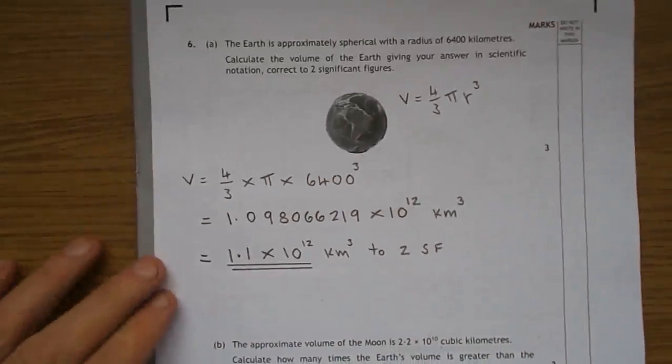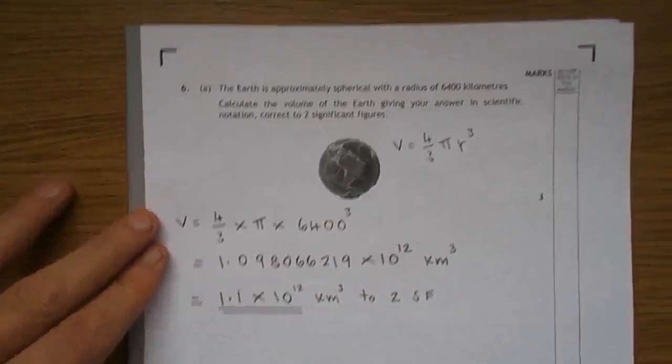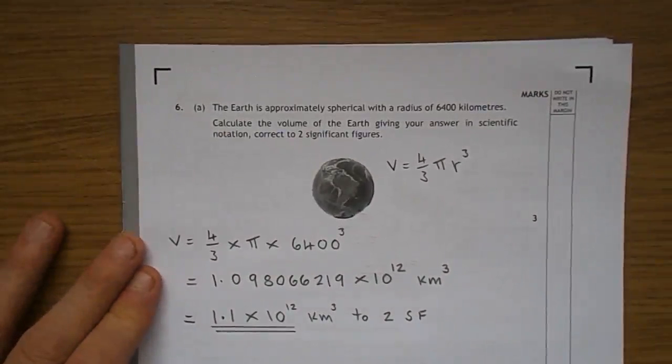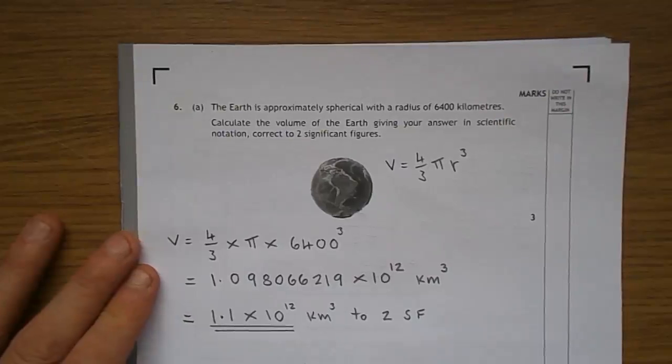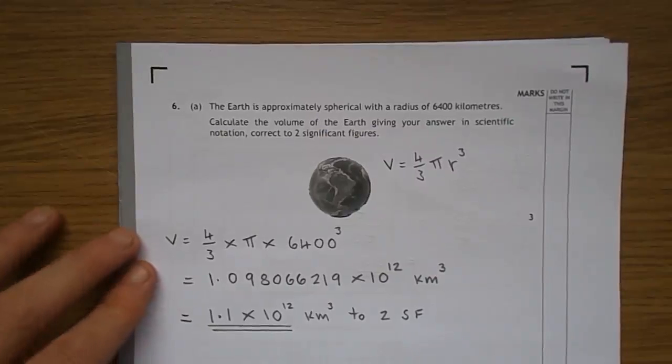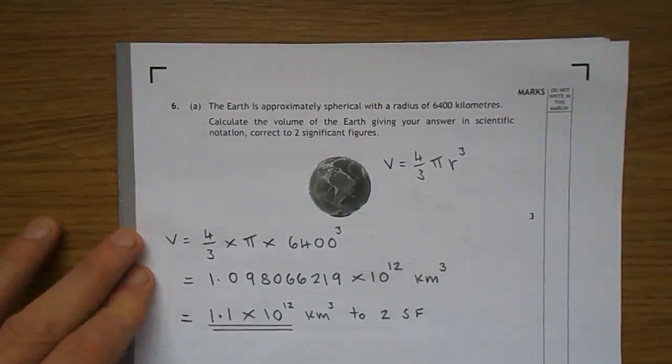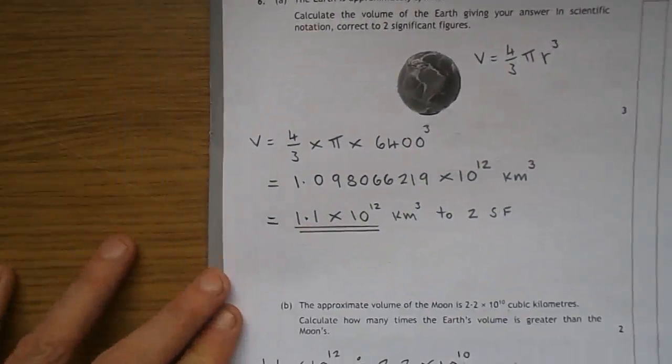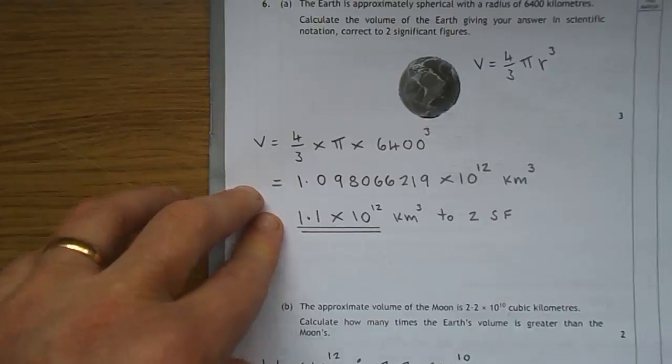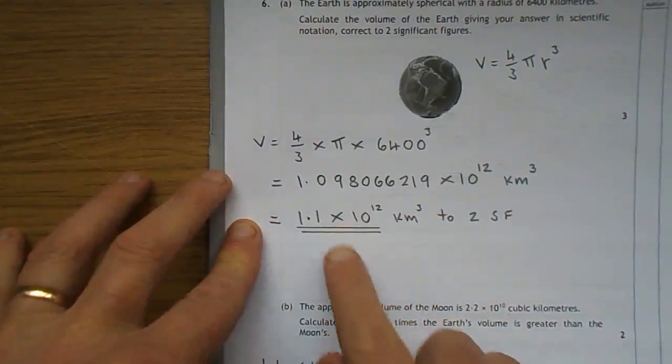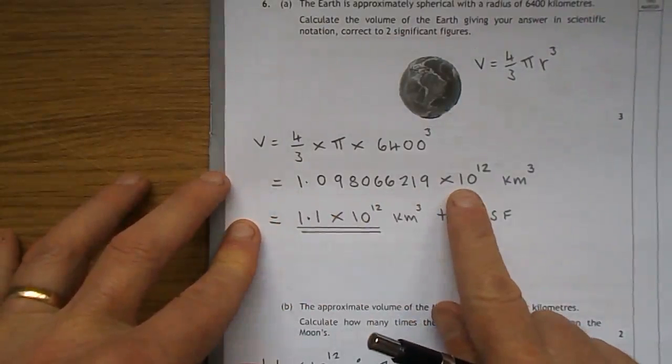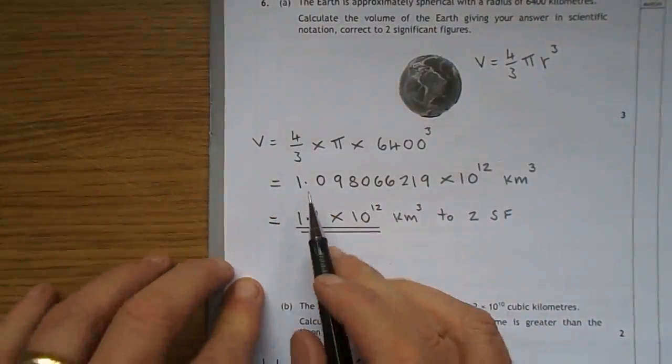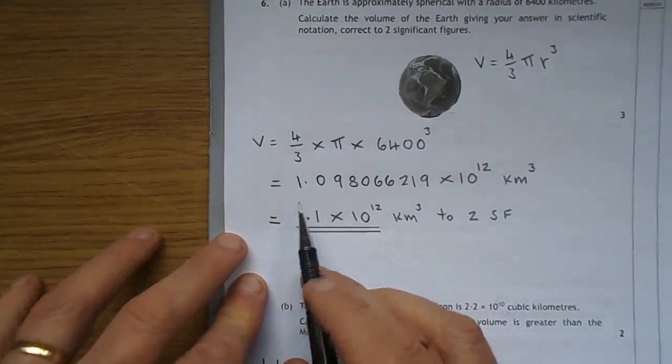On to number 6. Question 6a. The Earth is approximately spherical, with a radius of 6,400 kilometres. Calculate the volume of the Earth, giving your answer in scientific notation, correct to two significant figures. Volume of a sphere, 4 thirds pi r cubed, from your formula sheet. Plugging in the numbers, 4 thirds times pi times 6,400 cubed. My calculator gave it in standard form anyway, so that wasn't a problem.